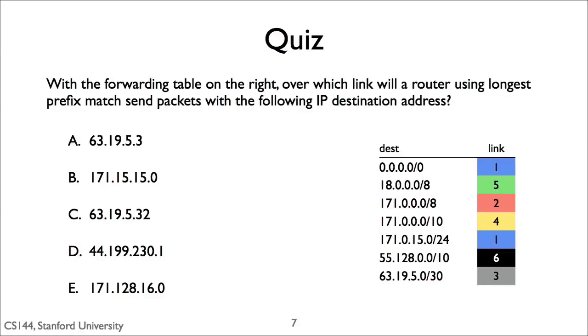With the forwarding table on the right, over which link will a router using longest prefix match send packets with the following destination IP addresses?